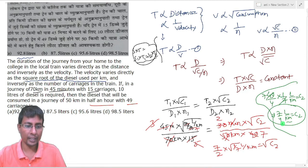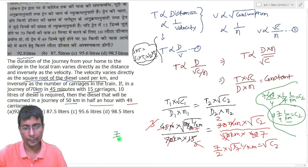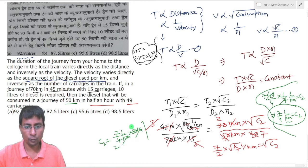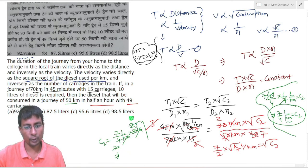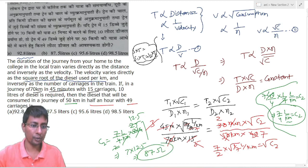Note that 7/4 liters per km is the consumption rate per kilometer in the second case. Since the total distance traveled is 50 km, total diesel consumed equals 7/4 liters per km multiplied by 50 km. Simplifying: 7 into 50/4 equals 7 into 12.5 equals 87.5 liters. So the ultimate answer is 87.5 liters.